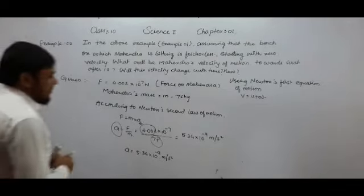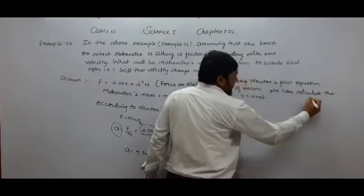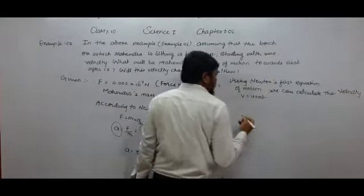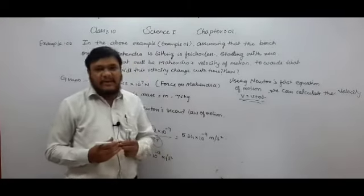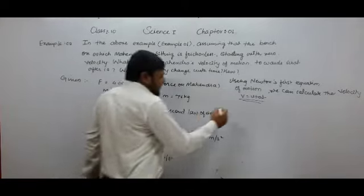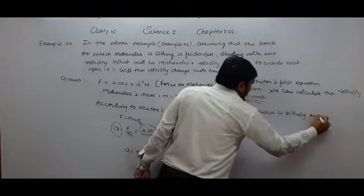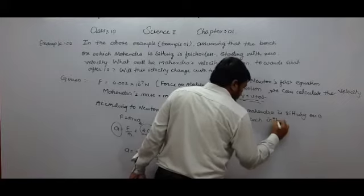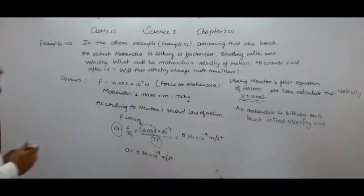According to Newton's first equation of motion, we can calculate the velocity. V is equal to U plus AT. At the initial level, Mahindra is sitting on a bench, so the initial velocity U is equal to 0.